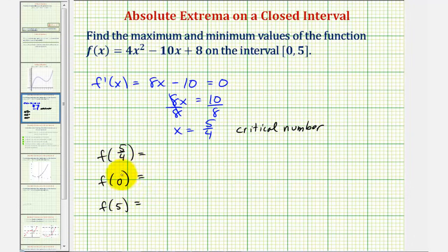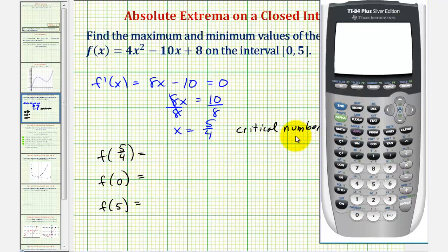Let's go and evaluate these using the graphing calculator. First we'll enter the function into y one. So we'll press y equals, enter the function, 4x squared minus 10x plus 8. And now we'll go back to the home screen. So second mode for quit. And now we'll enter y one of five fourths, y one of zero, and y one of five. So we'll press vars, right arrow, enter, enter.